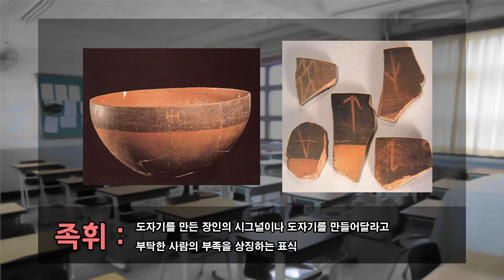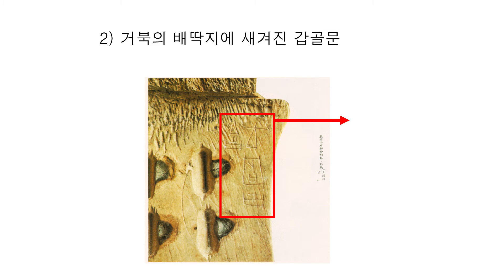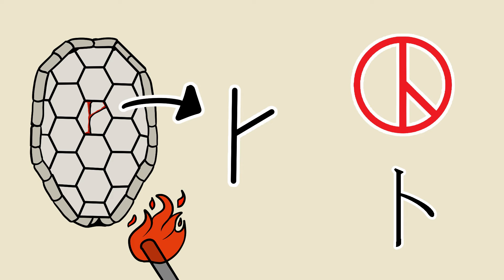현재 오늘날 가장 오래된 최초의 한자는 갑골문, 자구원이다 이렇게 얘기합니다. 지금 그림에 보이는 놀이끼리 하는 것은 짐승의 뼈고요, 검게 보이는 것은 점을 친 흔적입니다. 여러분들 4월 15일 총선 도장이 어떻게 생겼어요? 그게 어디서 나왔냐 하면 점칠 복 자입니다. 짝대기 쭉, 거기서 나온 거예요.